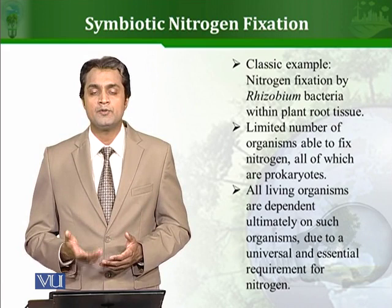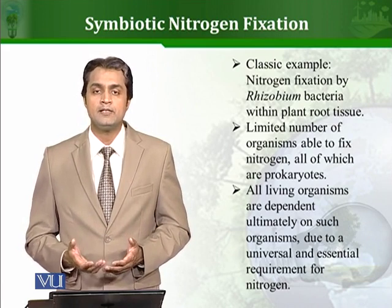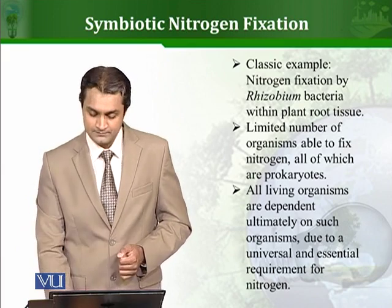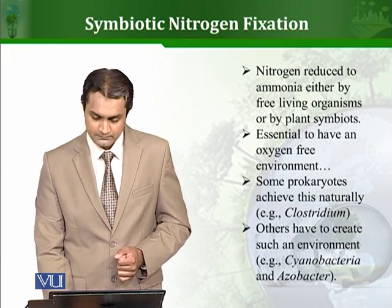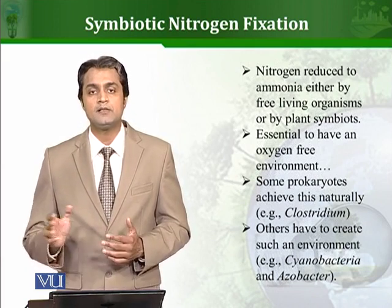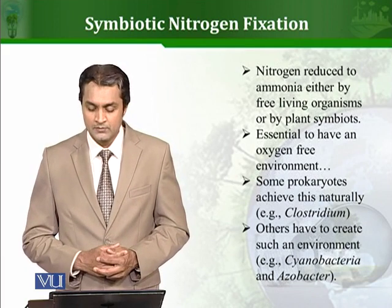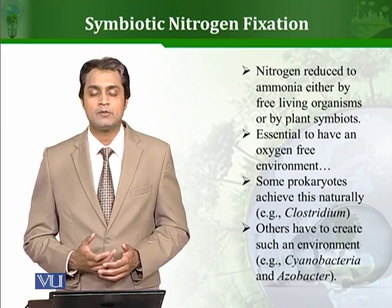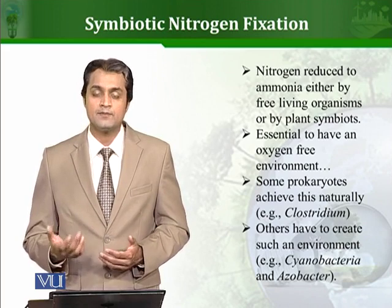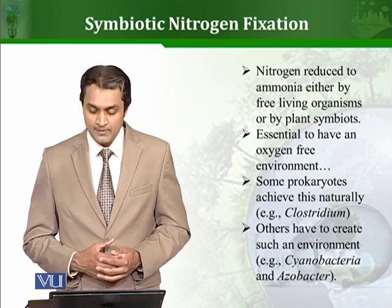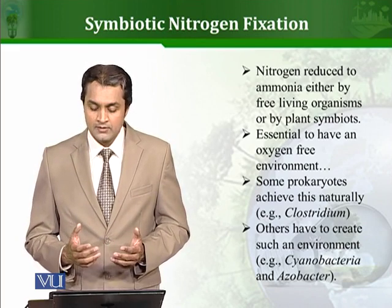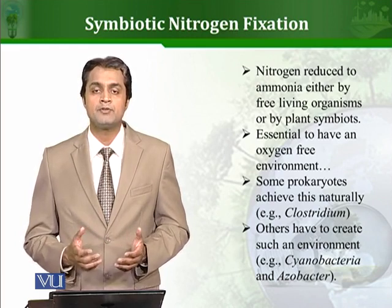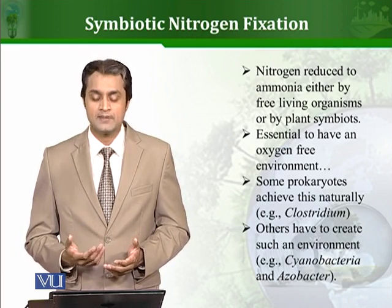If we see the whole picture of the nitrogen cycle, we can say that almost all living organisms directly or indirectly depend on microorganisms to fix nitrogen. It has a complete pathway — nitrogen is first converted to ammonia by either free-living microorganisms or by plant symbiotes, which are associations of microbes with plants. The basic requirement is that the environment should be oxygen-free in order to fix nitrogen.